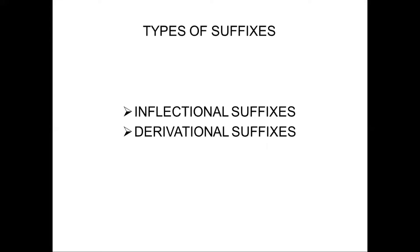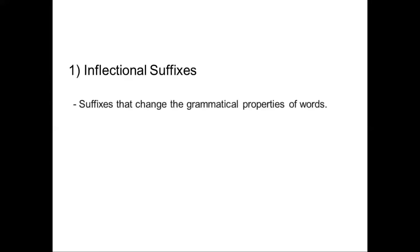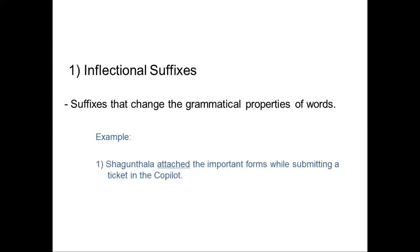There are two types of suffixes: inflectional suffixes and derivational suffixes. Inflectional suffixes change the grammatical property of a word when added to the end of a base word. For example, 'Shavuntala attached the important forms while submitting a ticket.' Here, 'attach' is the base word and 'ed' is added to make 'attached,' which is the past tense. This changes the grammatical property, hence it is called an inflectional suffix.